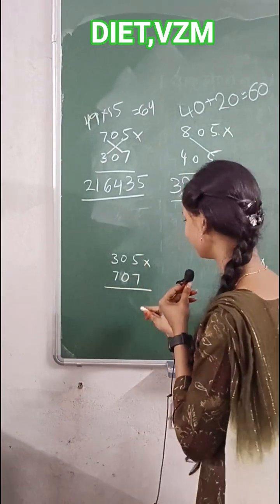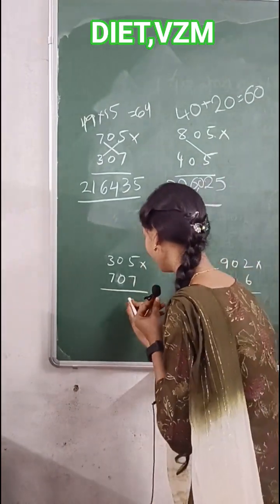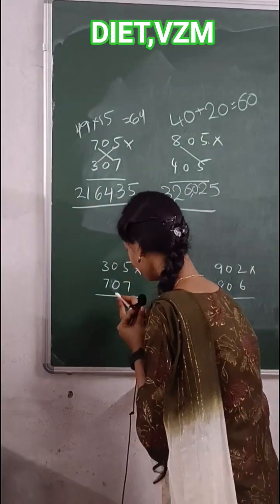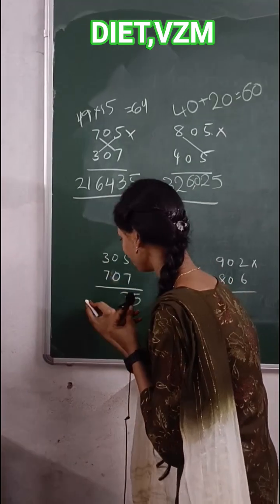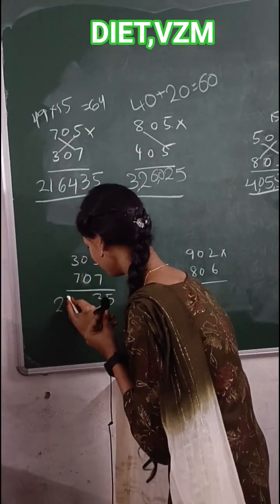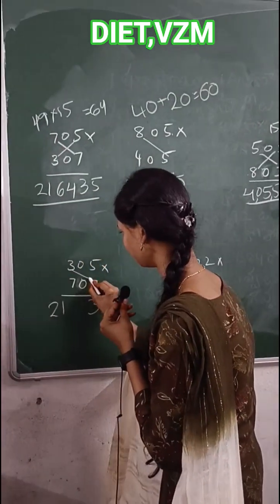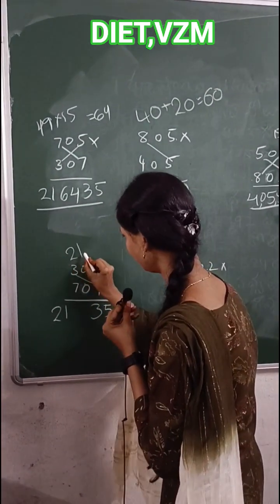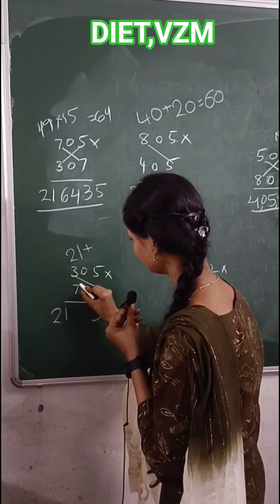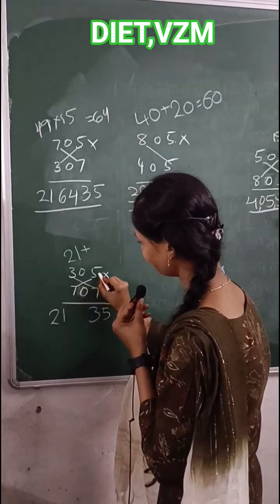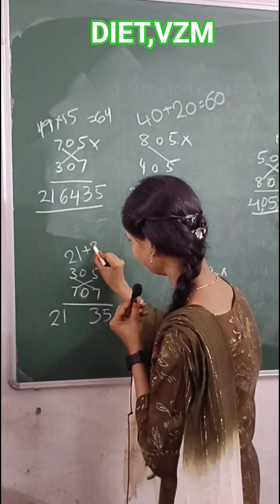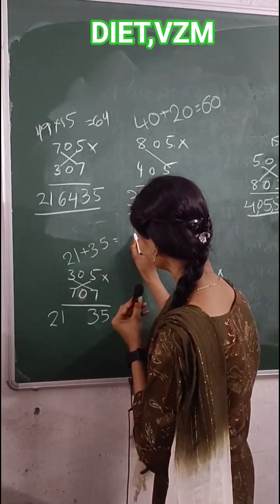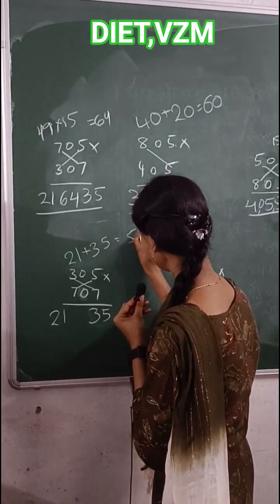Now, ends product: 5×7 is 35. 3×7 is 21. Now, cross product. 7×3 is 21, plus 7×5 is 35. 56.